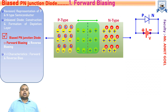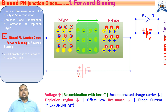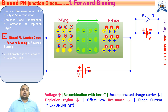Let us discuss the biasing of the P-N junction diode. A P-N junction diode is said to be biased when an external voltage is applied across its junction. Depending upon the polarity of the voltage, a P-N junction can be biased in two ways: forward biasing and reverse biasing. In forward biasing, the positive terminal is connected with the P-type semiconductor and the negative terminal is connected to the N-type semiconductor. Please make sure the voltage should be more than the cut-in voltage for the flow of current in the P-N junction.